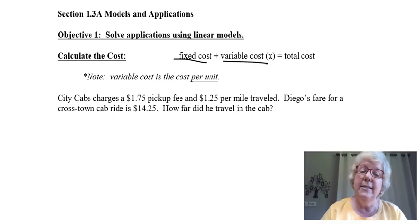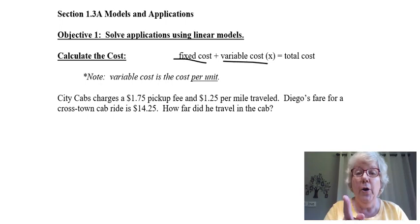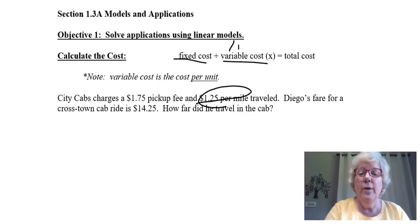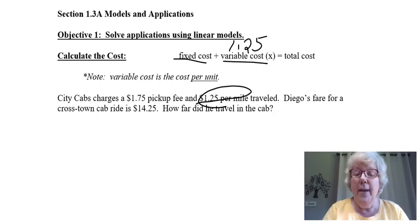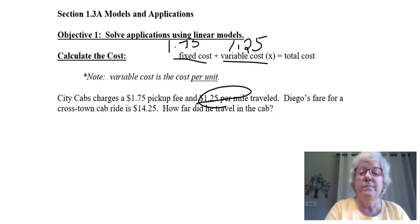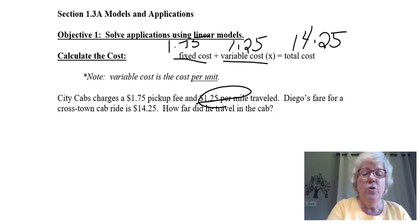In this example it says City Cabs charges a $1.75 pickup fee and $1.25 per mile traveled. Diego's fare for a cross-town cab ride is $14.25. So how far did he travel in the cab? The word per is important here. $1.25 per mile is our variable cost. The $1.75 pickup fee is the fixed cost, and $14.25 would be the total cost of the entire cab ride.